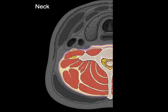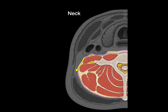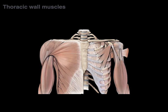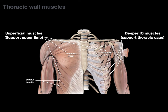When looking at the thoracic wall, there are superficial muscles that support the upper limb, like the pectoralis major, pectoralis minor, and serratus anterior — those will be covered in upper limb dialogue. We're going to focus on the deeper intercostal muscles that support the thoracic cage. The intercostal muscles are three layers of muscles segmentally located between the ribs and costal cartilage.